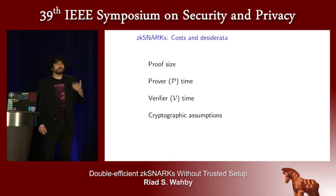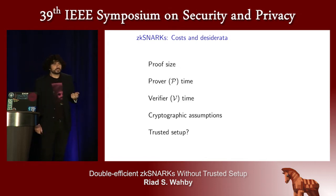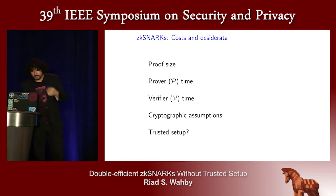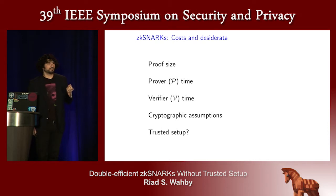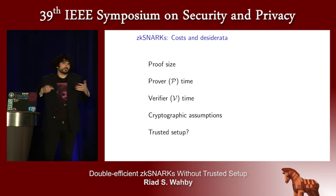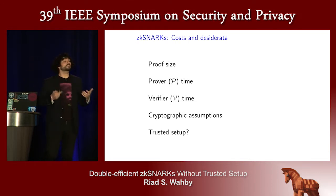Also remember, since this is an argument, we have to make some cryptographic assumption. And different ZK snarks make different assumptions, and maybe we believe one and not another. And finally, some ZK snarks, including the ones most widely deployed today, require a trusted setup — that's some expensive one-time computation. You can only believe that a proof is valid if you trust the person who ran that one-time computation. So you can see there's a lot of variables here, and it implies a big design space. Every kind of ZK snark gives a different mix of these properties.